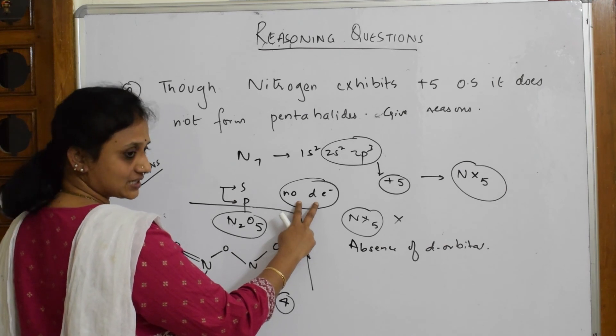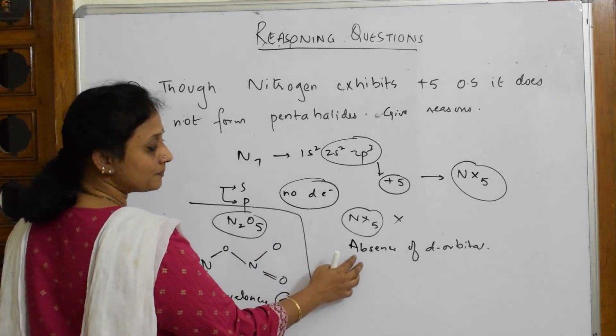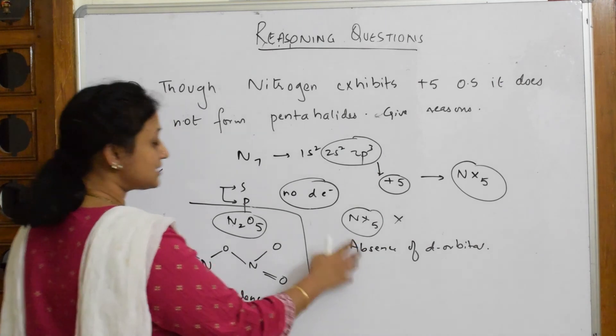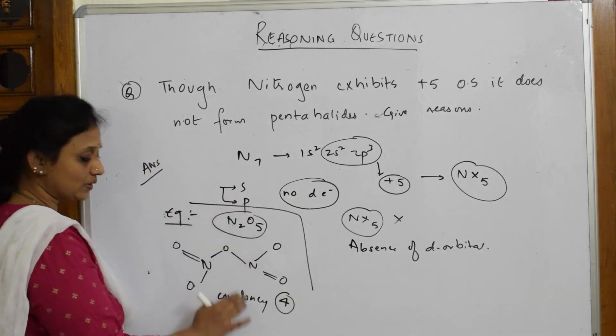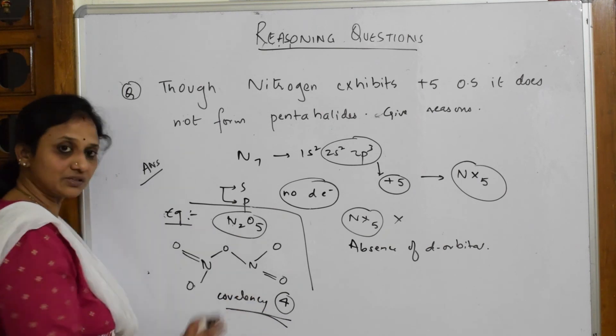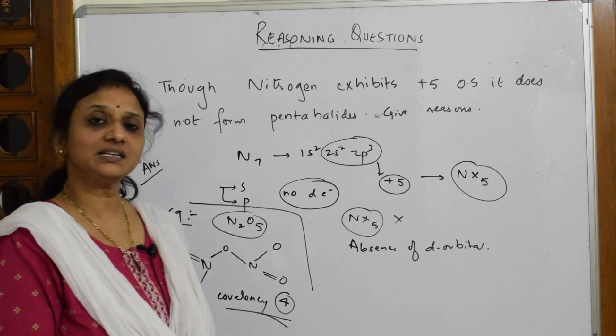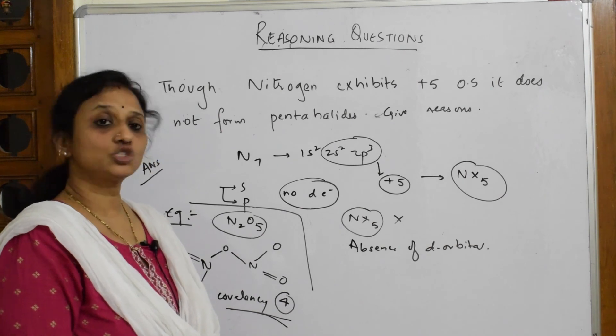In the same way, you can pick up this example and explain: it forms N₂O₅ where the covalency is only four. So this proves further that it can't extend its valency or it can't show pentahalides.